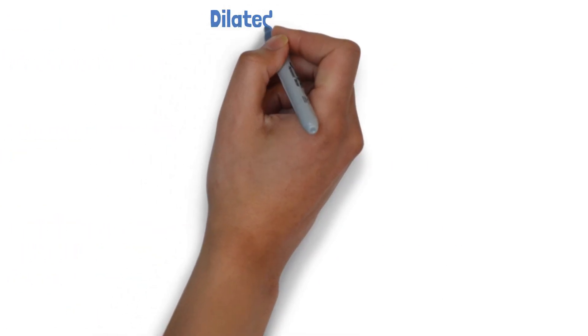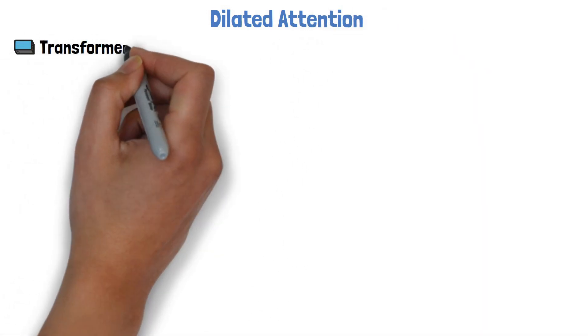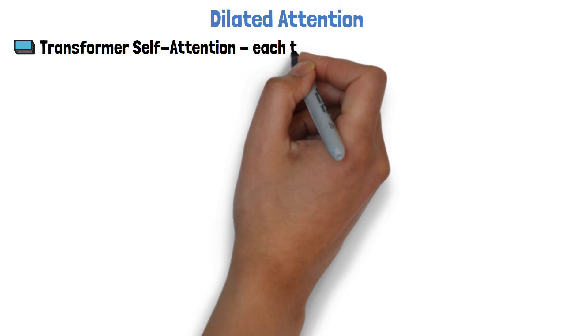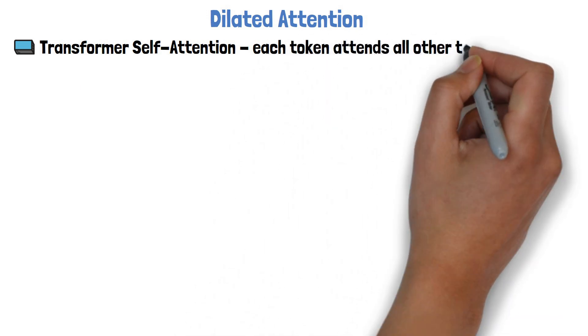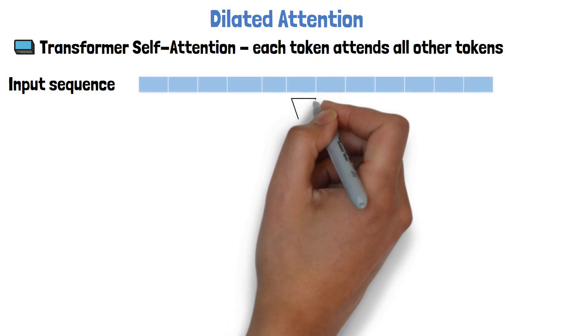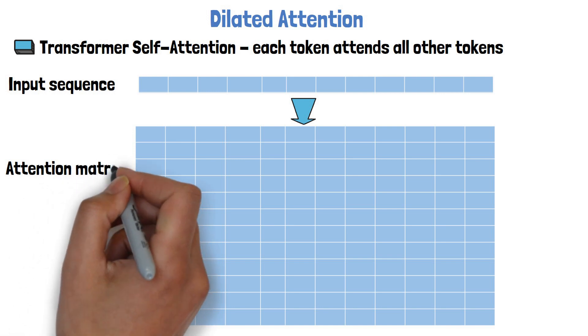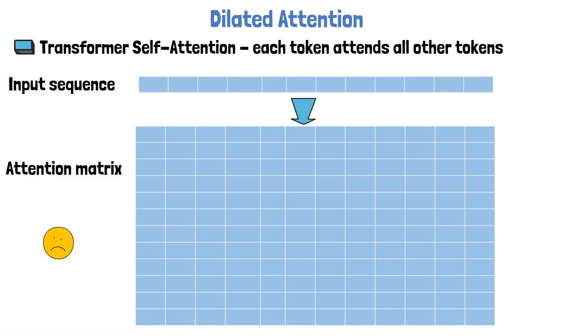In the core of the transformer model we have self-attention, where each word is attending every other word in the input sequence. So for an input sequence, for example, like this sequence of 12 tokens, we would get a 12x12 matrix which is called the attention matrix. This matrix has a quadratic dependency on the sequence lengths, which makes it very difficult to scale up the context lengths.